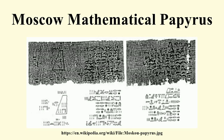The Moscow Mathematical Papyrus is an ancient Egyptian mathematical papyrus, also called the Golenischief Mathematical Papyrus, after its first owner outside of Egypt, Egyptologist Vladimir Golenischief. Golenischief bought the papyrus in 1892 or 1893 in Thebes.